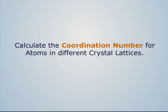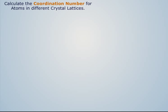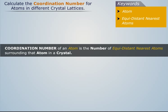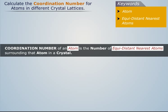We will calculate the coordination number for atoms in different crystal lattices. The coordination number of an atom is defined as the number of equidistant nearest atoms surrounding that atom in a crystal.